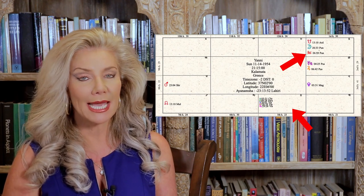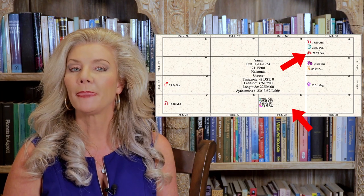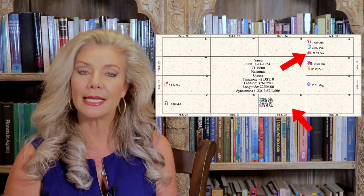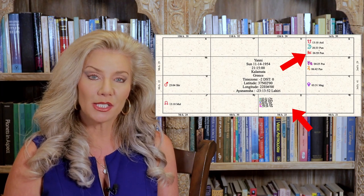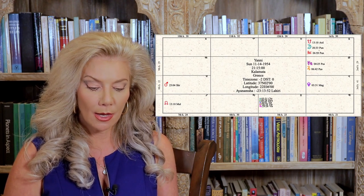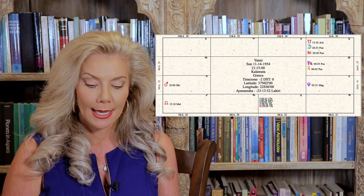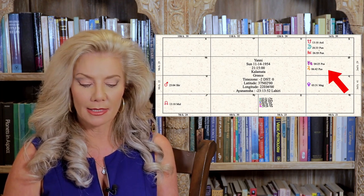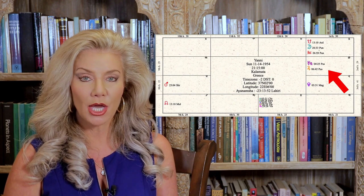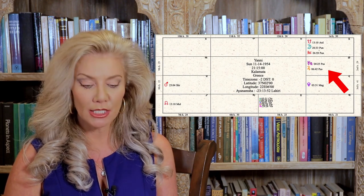Now I know the sun is debilitated, but remember anytime a planet that's debilitated is next to a planet that's exalted, the debilitation is pretty much canceled. So that takes care of that. Now there's two other planets that you can't take your eyes off. And that is exalted Jupiter.